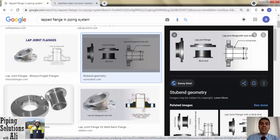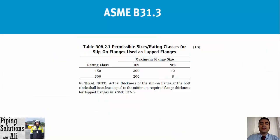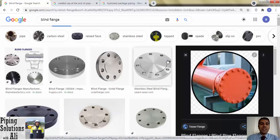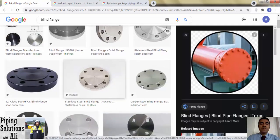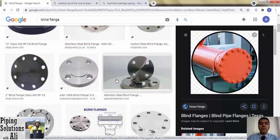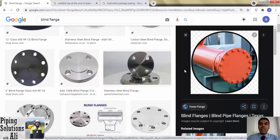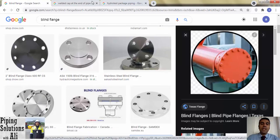A slip-on flange could be used as a lapped flange if the requirements of Table 308.2.1 are met. We can use slip-on up to NPS 12 for rating class 150, and up to NPS 8 for rating class 300. Blind flange is the last type of flange specified in B16.5.